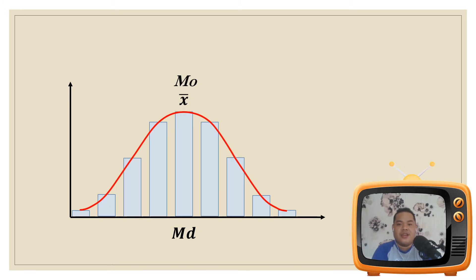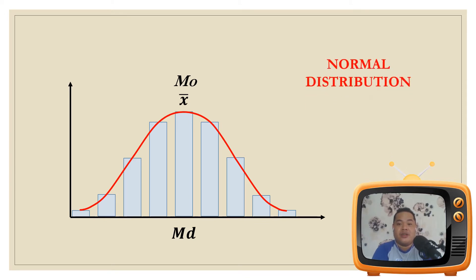This is another type of dispersion that shows balance between the left side of the median and the right side of the median. In fact, the median, the mode, and the mean are found at the same location. This is a normally distributed type of data set.